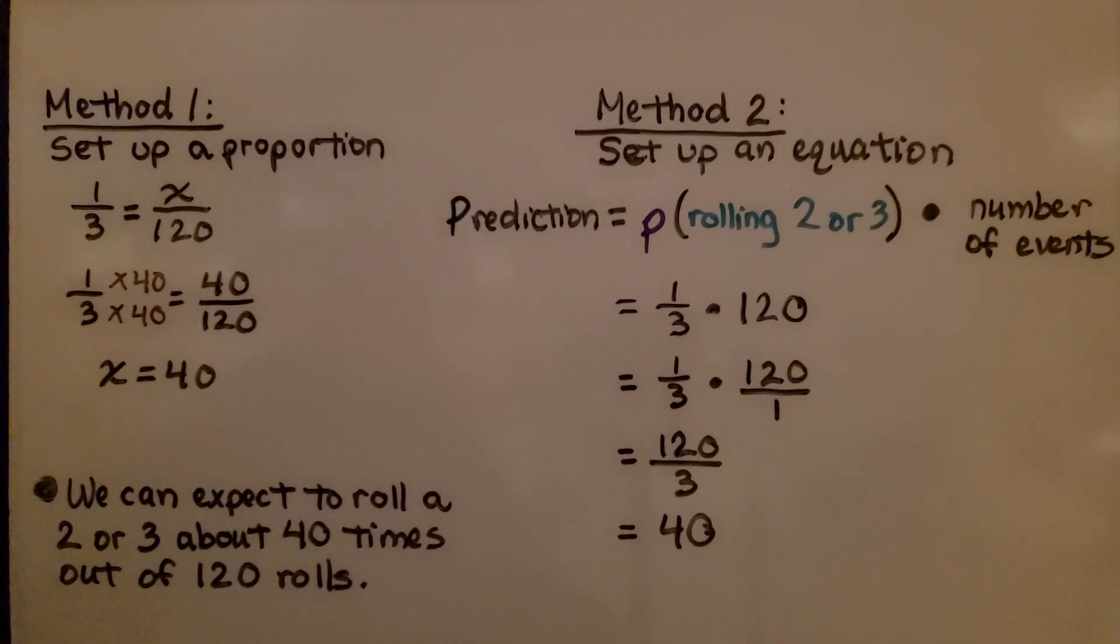Method 1, we set up a proportion. We know that the chance of occurring as a 2 or 3 is 1/3. We're going to roll 120 times. We have 1/3 is equal to x over 120. We ask ourselves, 3 times some number is equal to 120, that would be 40.